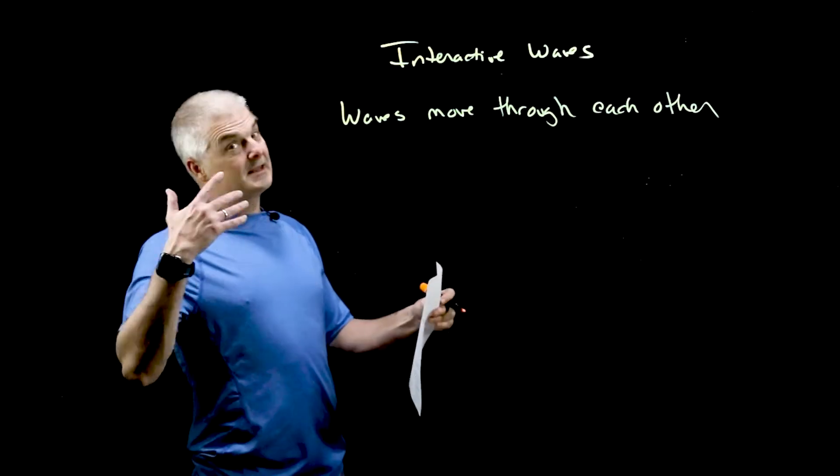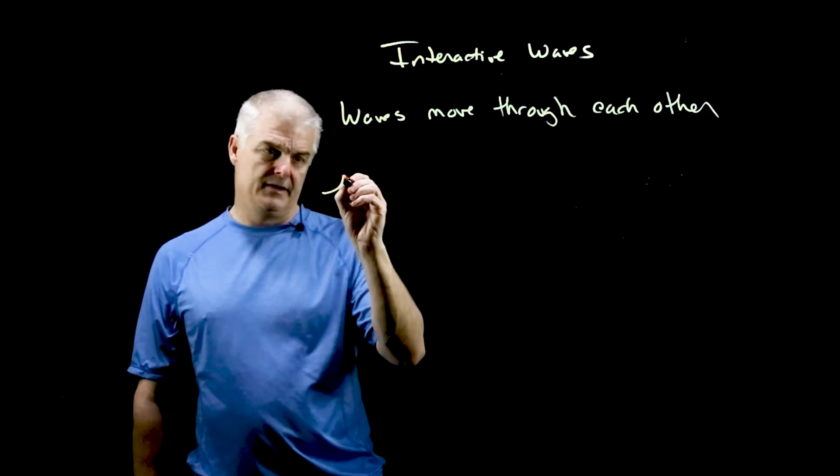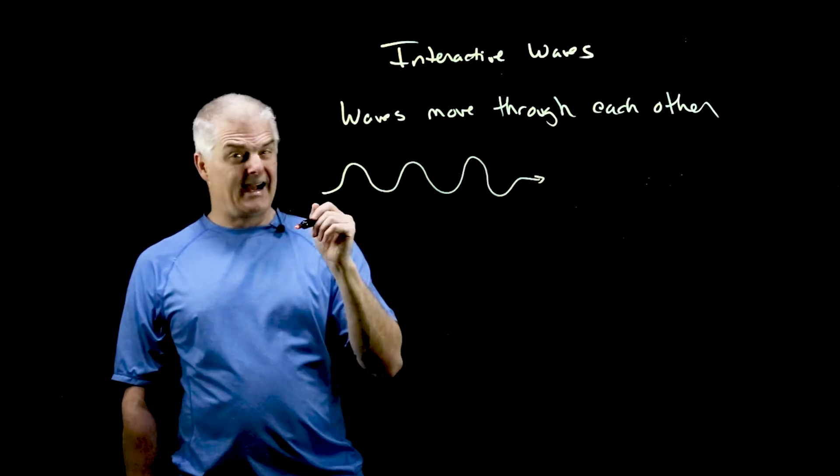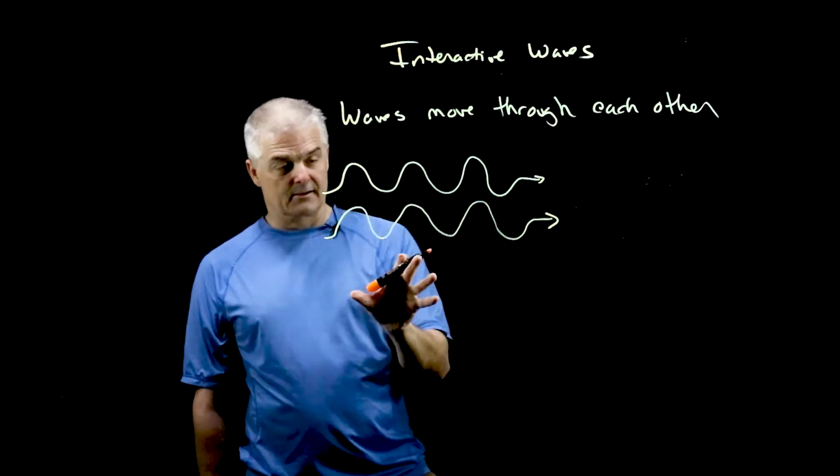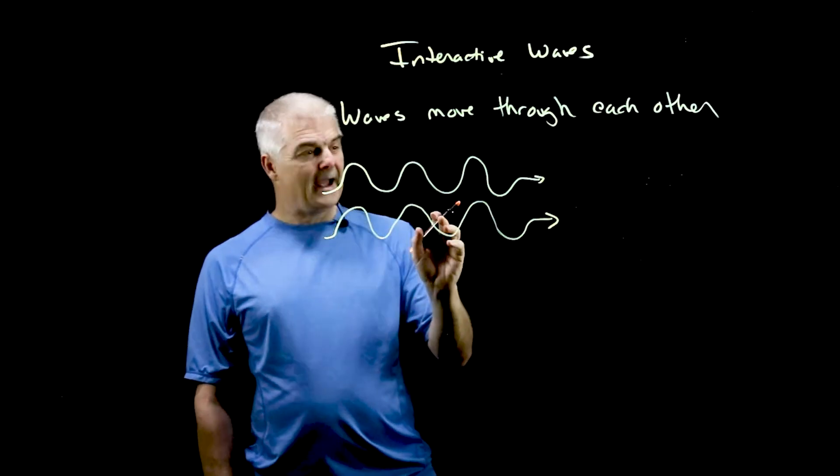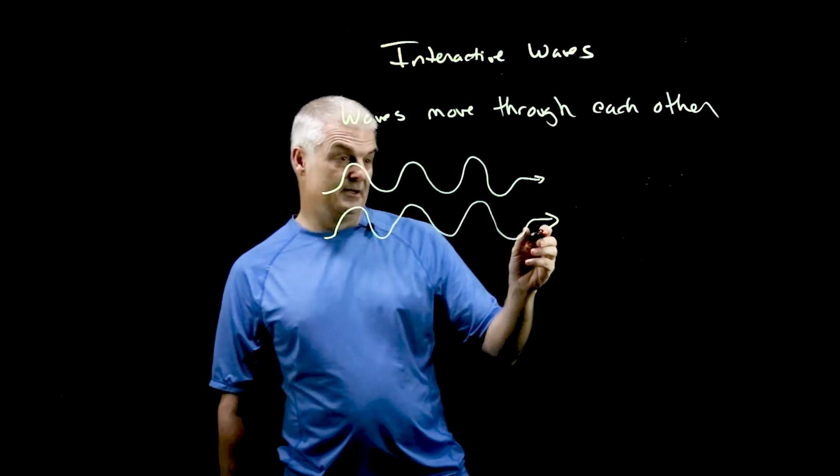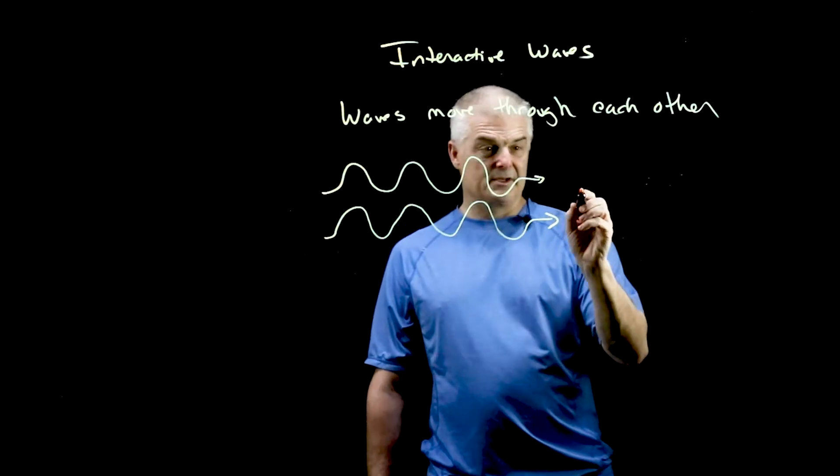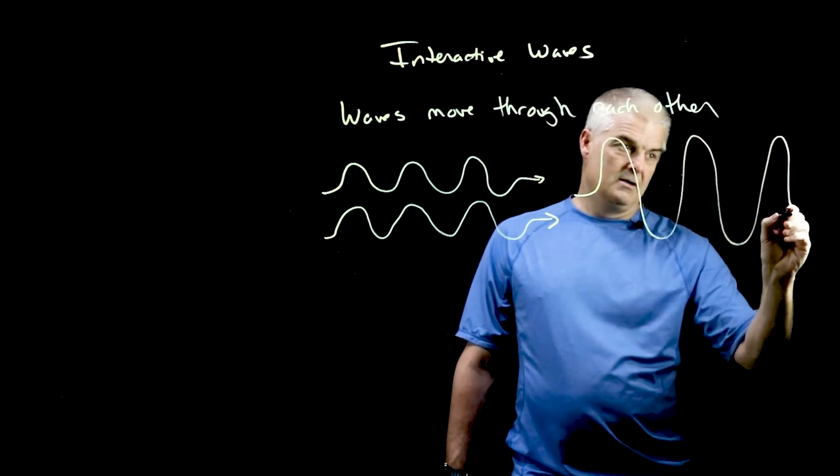Now there's different ways that they can move. So let's say I've got this wave, and then I add to it this wave. I tried to draw these identically, not a very good job. What happens when these guys move through each other? I don't know if you figure it out, but it's going to look like that.